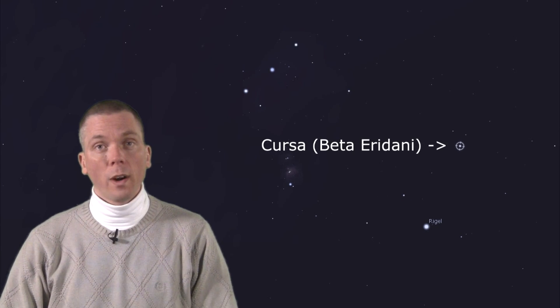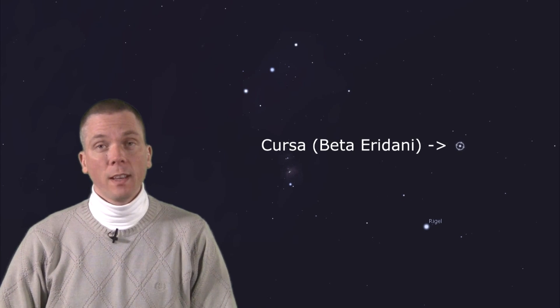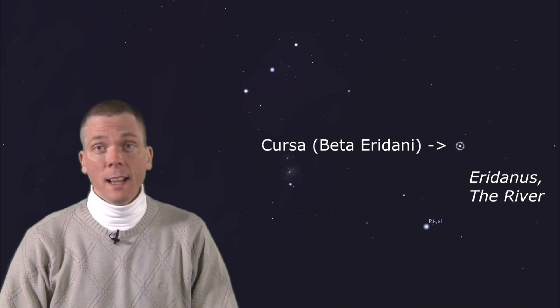There are three stars just above Rigel in Orion. The first two are Epsilon and Tau, and along that same line is this third magnitude star, Cursa, or Beta Eridani, is actually in Eridanus, the river.